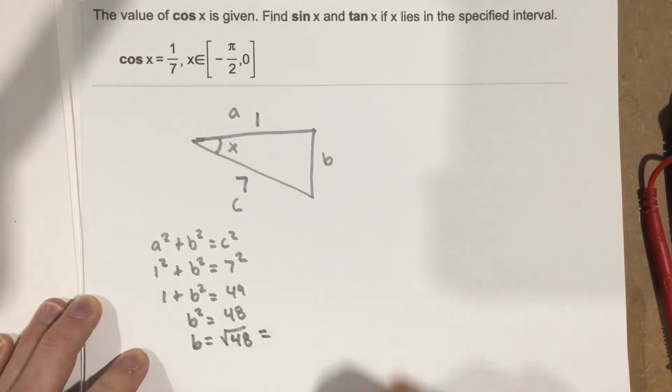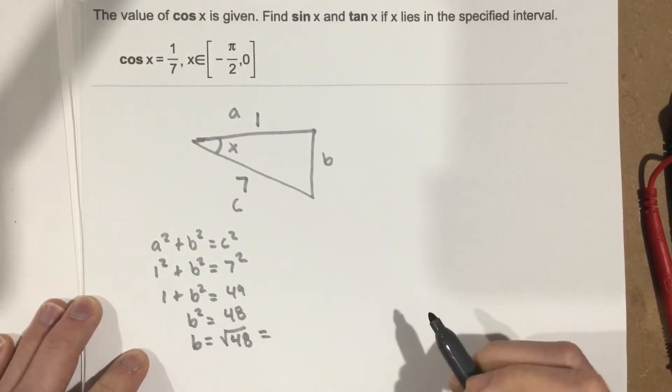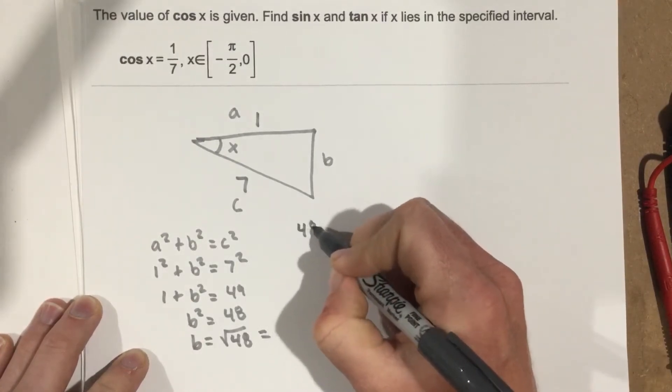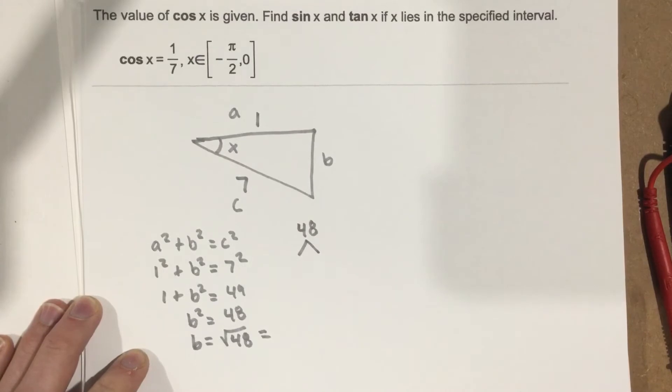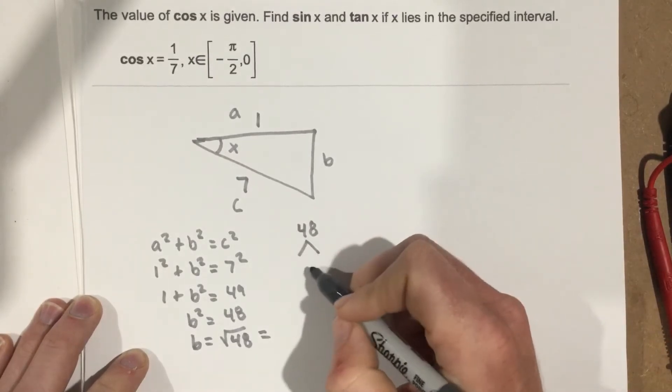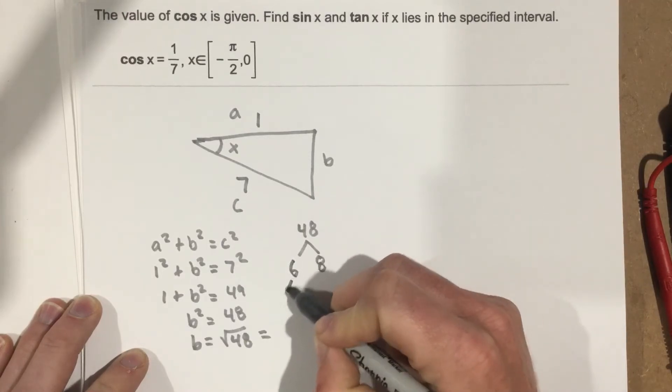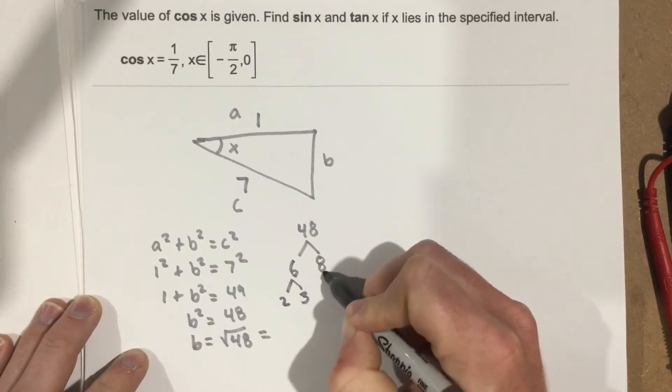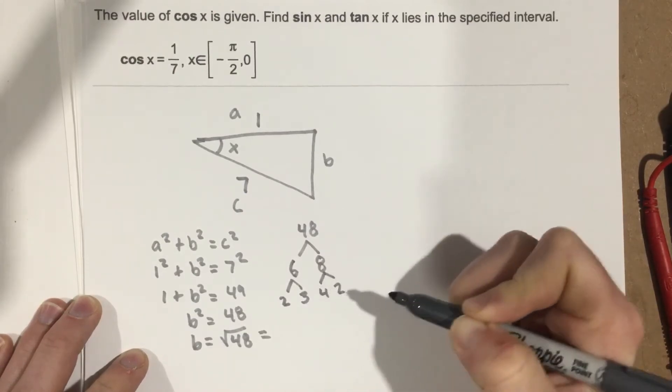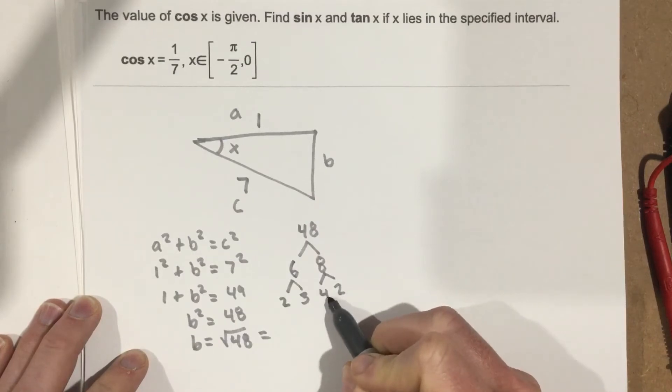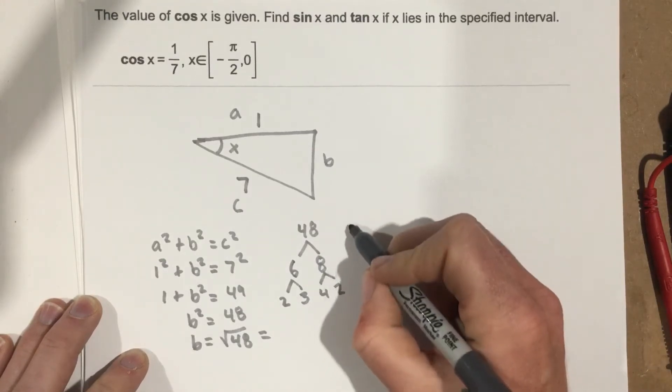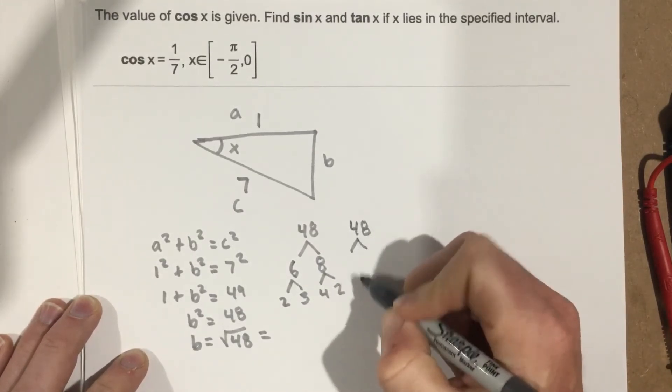Now, I think they're going to want us to have exact answers for this. So we don't want to put in root 48 and get a decimal. We want to take root 48 and break 48 down and take out and reduce the square root, essentially, take out what we can from the square root. So let's just break this down to 6 and 8. So this breaks down to 2 and 3 and 4 and 2. So if I took 2 times 2 times 4 times 3, I end up with 48. So I have actually two 4s in there. So I could say that 48 really breaks down to 16 and 3.